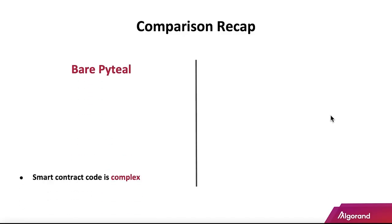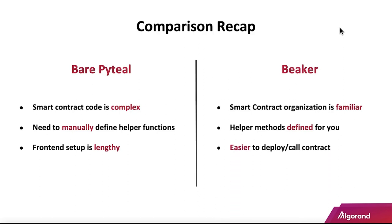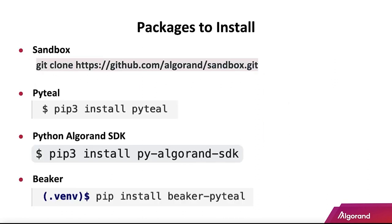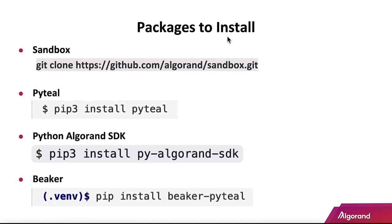Recap: bare PyTeal smart contract code is complex, you have to manually define helper functions, and the front-end setup can be lengthy. With Beaker, smart contract organization is familiar, helper methods are already defined with more on the way, and it's easier to deploy and call the contract. The makeup of Beaker: you have the application class with state and decorators on the left — those are smart contract related — the application client in the middle tier for deploying and calling contracts, and the sandbox for testing. To install: clone it, then install PyTeal, the Python Algorand SDK, and then Beaker.